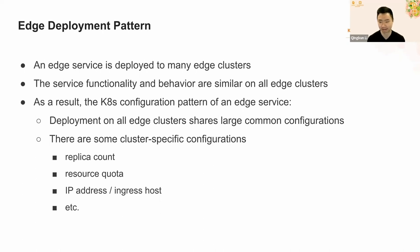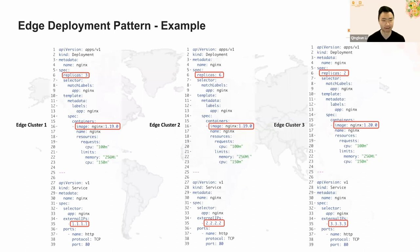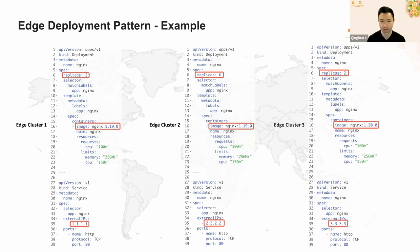This is because different edge clusters may have different numbers of server nodes and different IP address ranges. Here is an example of the configuration of such a deployment pattern. We use a sample engine service deployed to three edge clusters. The majority of the deployment and service configuration across all three clusters is the same, except for some cluster-specific configurations: the replica count, image version, and external IP. For such a deployment pattern in Kubernetes, we can use tools like Helm and Kustomize to manage the common and cluster-specific configuration parts.